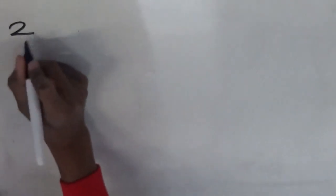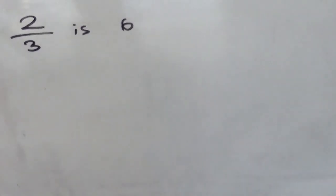Welcome back math fans, and today we'll be learning how to find the whole number from the part or the fraction. So we'll be starting off with an easy one, and we'll be doing 2 thirds is 6. But what will a whole one be?